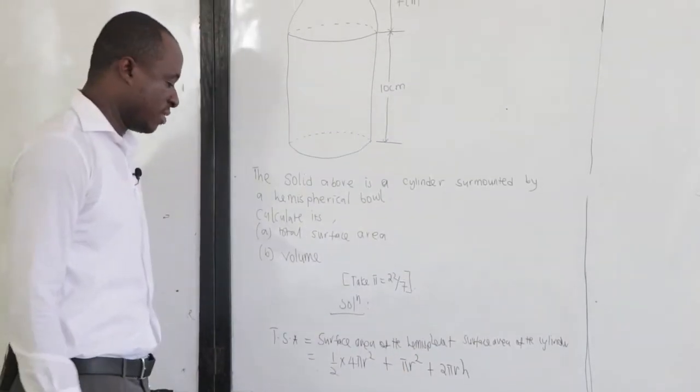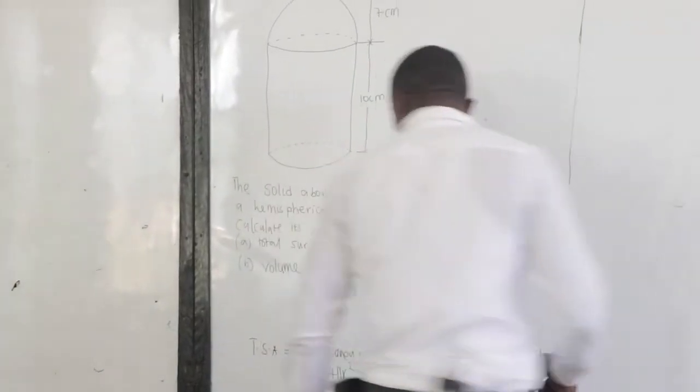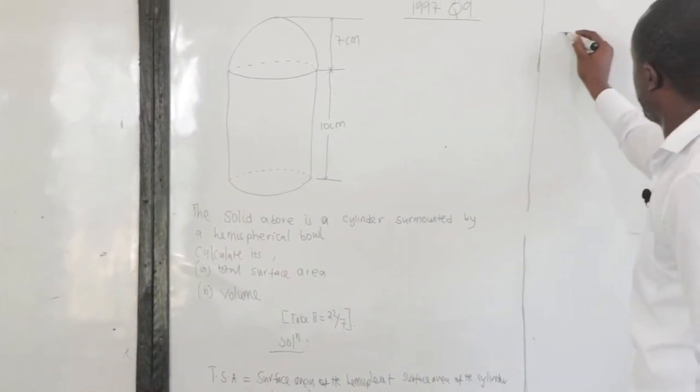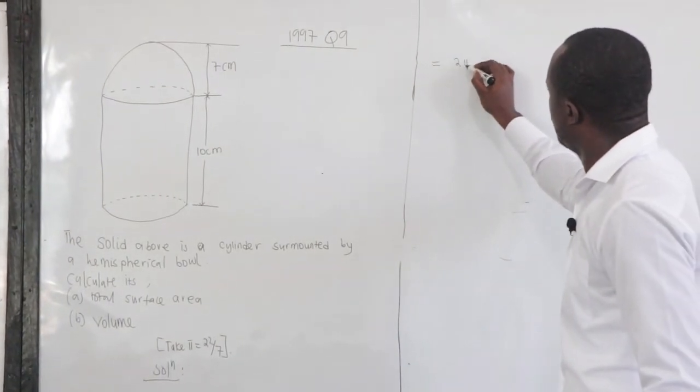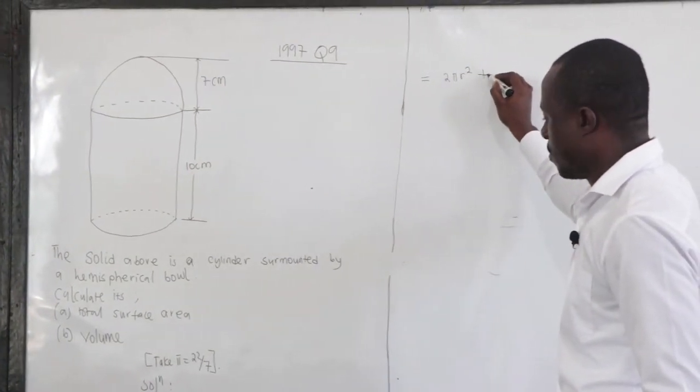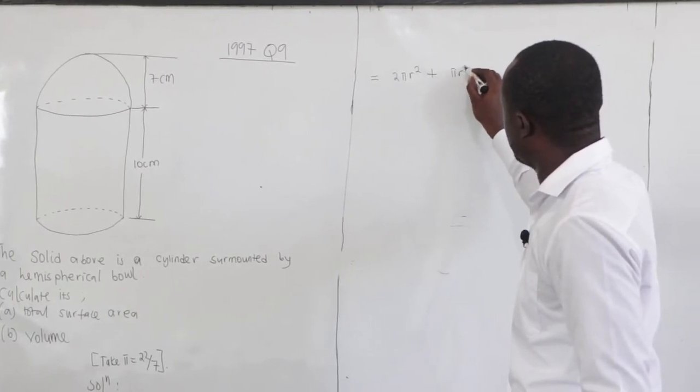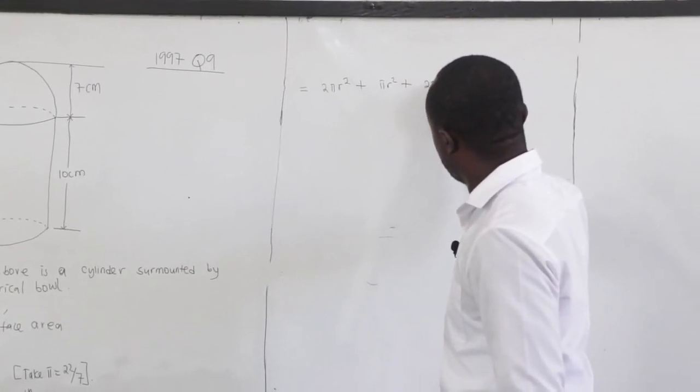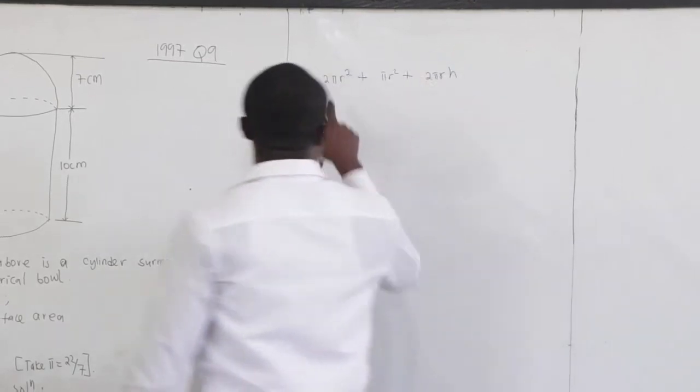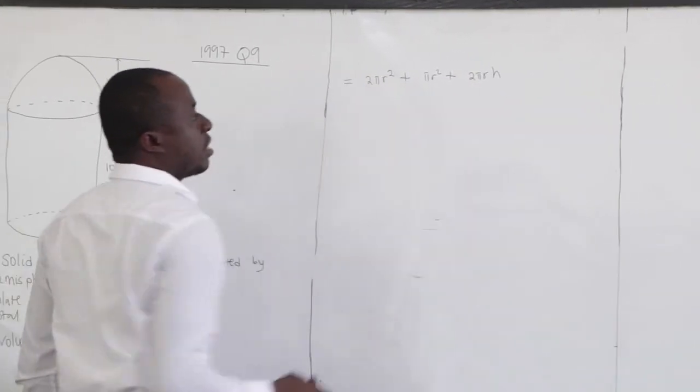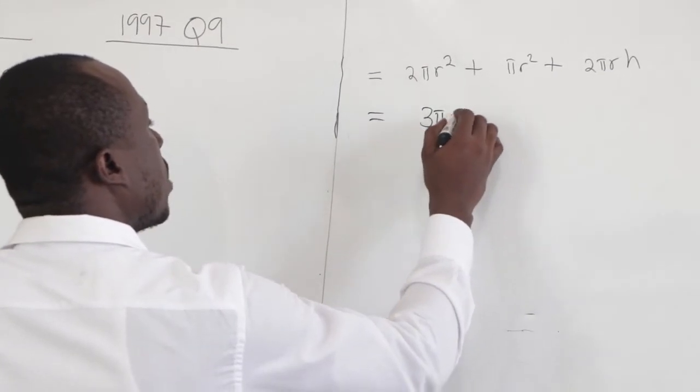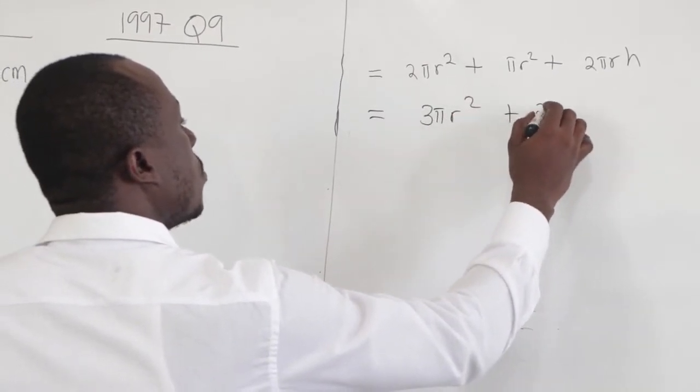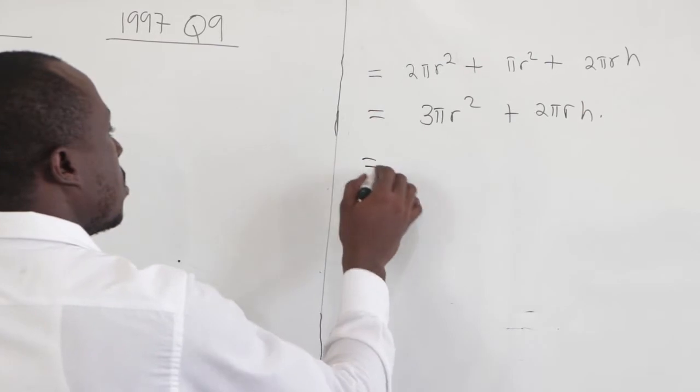That is the curved surface area. And from here, our TSA would be equal to 2 pi r squared plus 2 pi r h. Now, 2 pi r squared plus pi r squared, this will give us 3 pi r squared plus 2 pi r h.